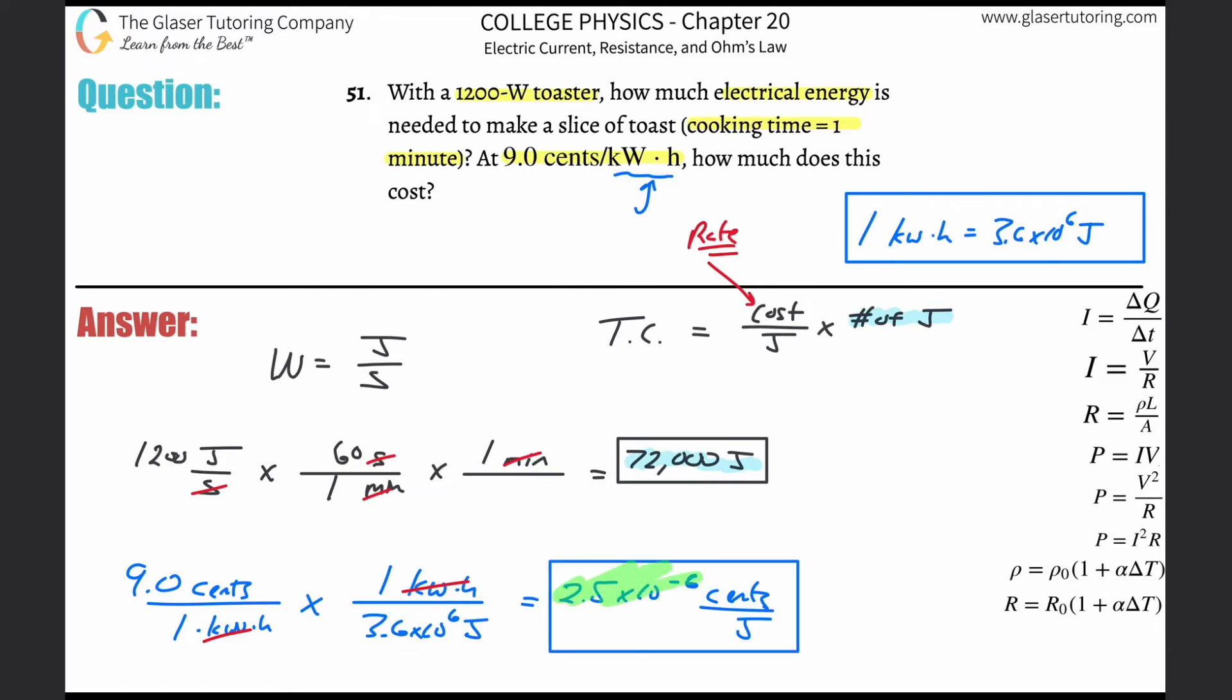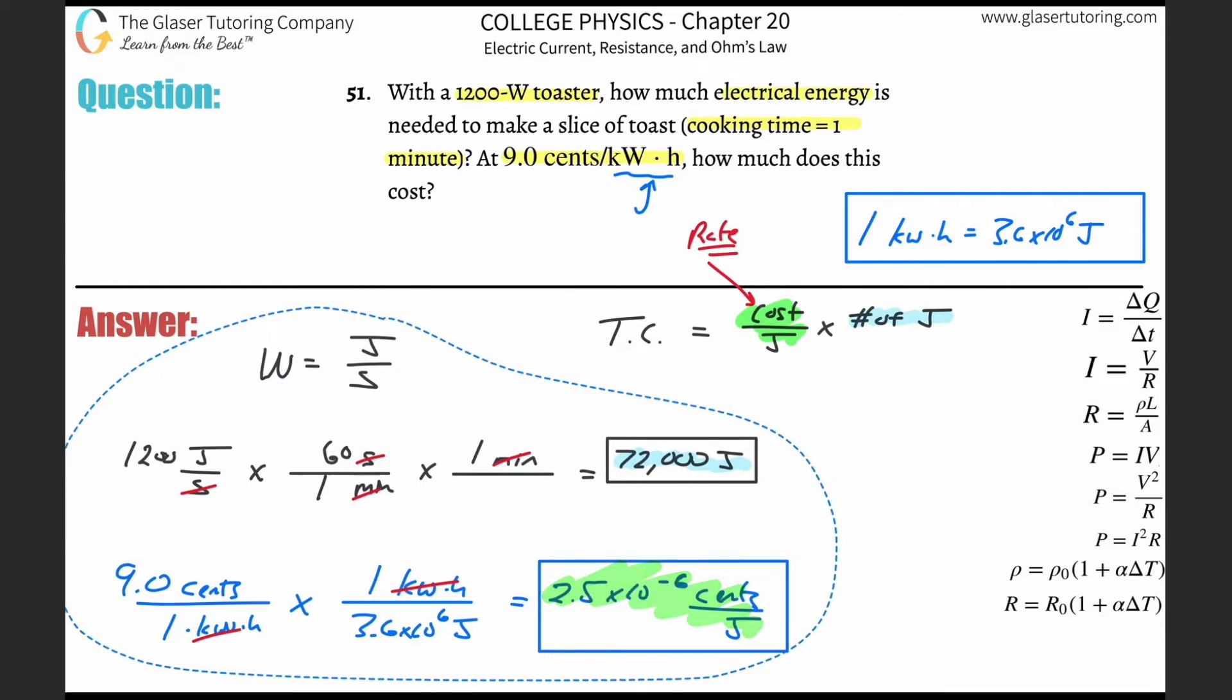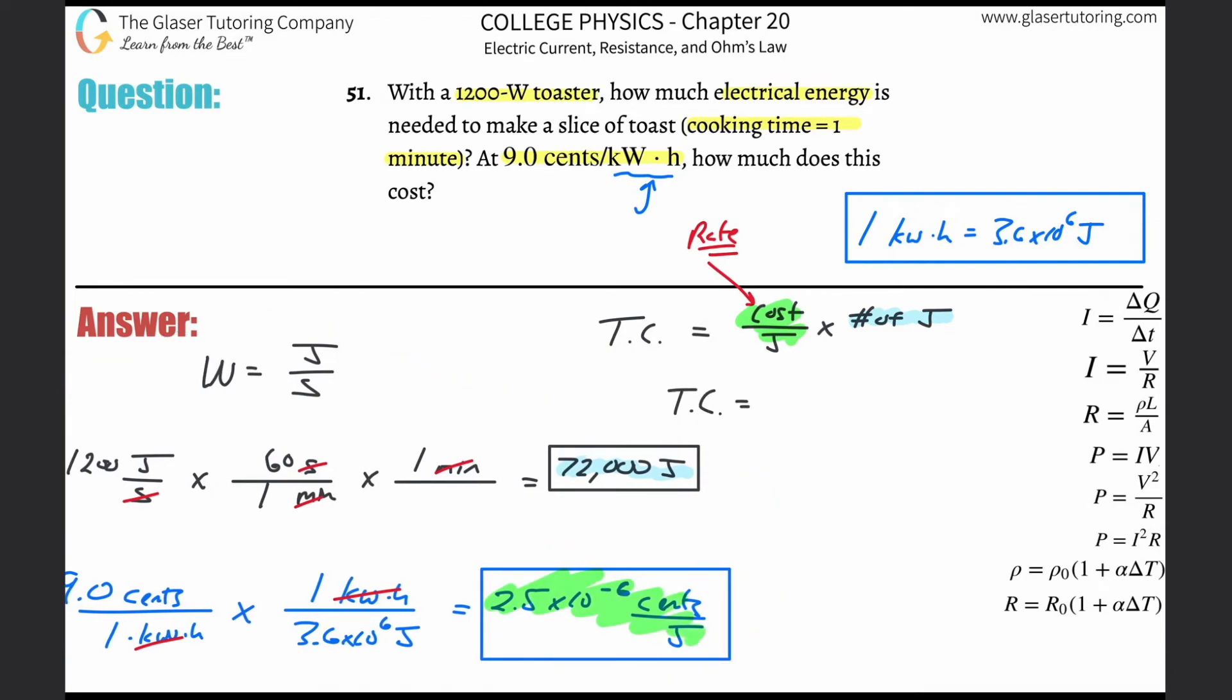This is the rate, this is the cost per joule. So I have this now, how do I find the total cost of running the appliance to cook the piece of toast? I just got to plug it in. So the total cost here is going to be equal to our 2.5 times 10 to the minus 6 cents per joule multiplied then by the number of joules which we calculated that were used, 72,000. So the total cost of cooking your piece of toast will be 2.5 times 10 to the minus 6 multiplied by 72,000, a whopping 18 cents.